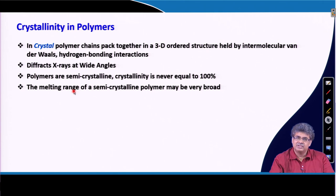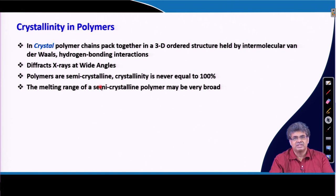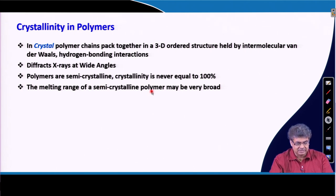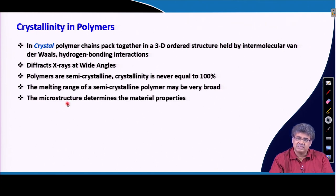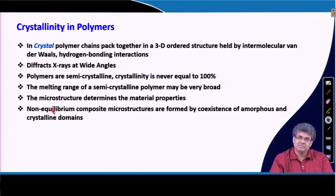In a polymer melt, the polymer chains remain as an entangled mass. Unlike small molecules where the melting point is very sharp, in the case of polymers the melting point is not sharp — there is a melting range. This is because of the presence of amorphous regions between the crystalline domains, and those amorphous regions affect both Tg and Tm of the polymer. The microstructure — containing both amorphous and crystalline domains — determines the material property. In semi-crystalline polymers, we have a non-equilibrium composite microstructure.